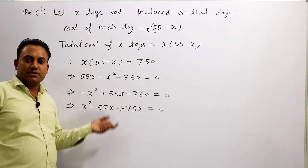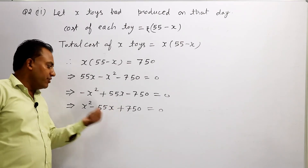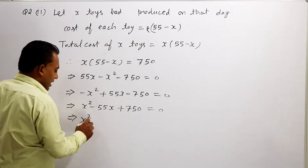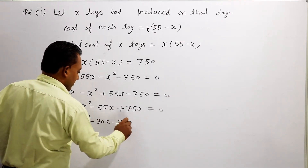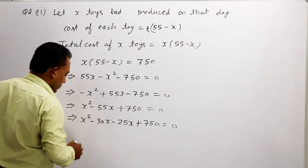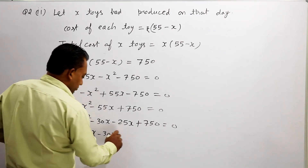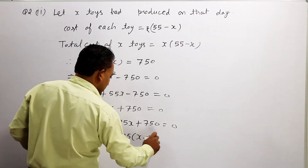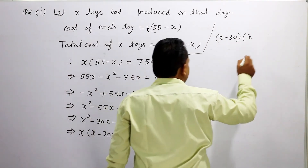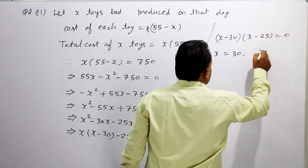यह quadratic equation बन गई जिससे हम x निकाल सकते हैं. अब 750 के ऐसे दो factors सोचें जिनका sum 55 हो — 25 और 30. तो x² minus 30x minus 25x plus 750 = 0. x(x minus 30) minus 25(x minus 30) = 0, यानी (x minus 30)(x minus 25) = 0. तो x = 30 या x = 25.